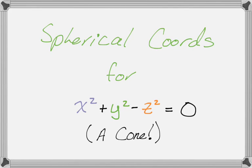Okay, in this video, we are going to find spherical coordinates for the equation x squared plus y squared minus z squared equals zero, which is actually just a cone that has its vertex at the origin. So it's a pretty common type of cone.